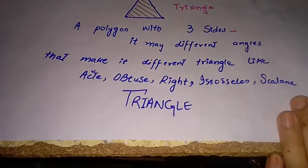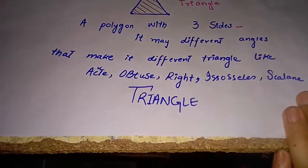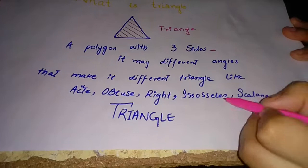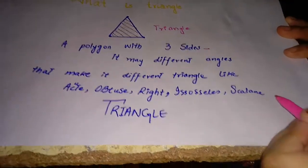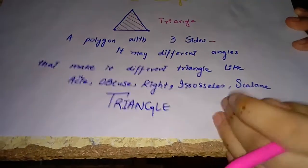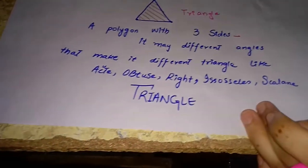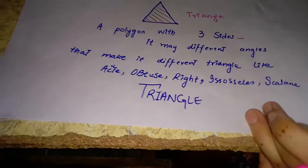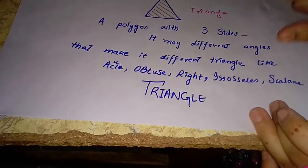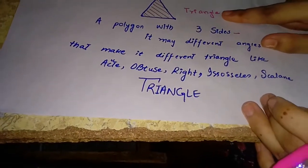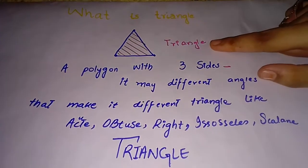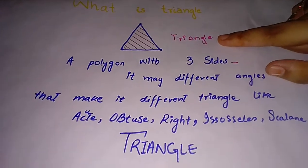That makes different types of triangles, like acute, obtuse, right, isosceles, and scalene triangles. There are different angles but their major name is used as triangle.